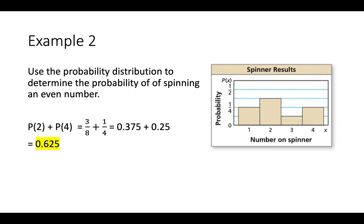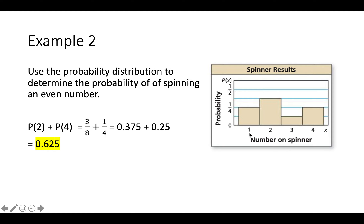Here's an example similar to what you'll see in the exit ticket, where you look at a histogram and answer a question about it. It says: use the probability distribution to determine the probability of spinning an even number. There's a spinner that can land on 1, 2, 3, or 4, and the sections aren't equal in area, so some numbers are more likely than others. Only two of those four outcomes are even numbers: 2 and 4.